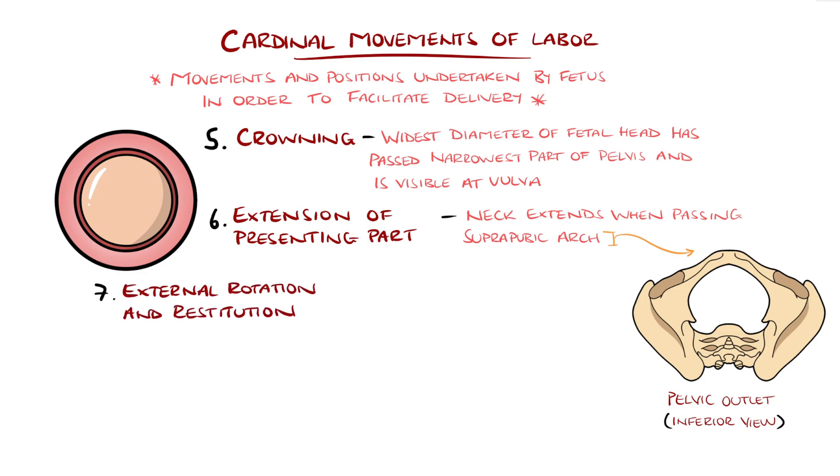Then comes external rotation and restitution. At this stage, the shoulders of the fetus will be reaching the pelvic floor, and as they pass the pelvic outlet, the head may be seen to rotate externally to face the left or right medial thigh of the mother. The realignment of the head and the shoulders is called restitution.